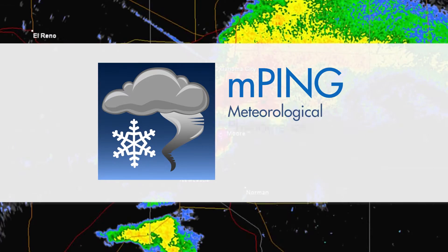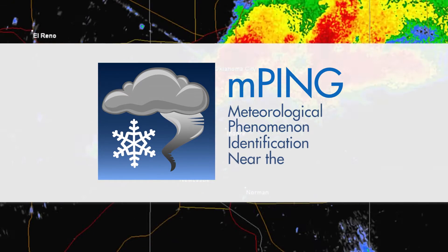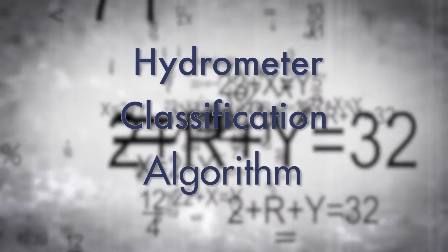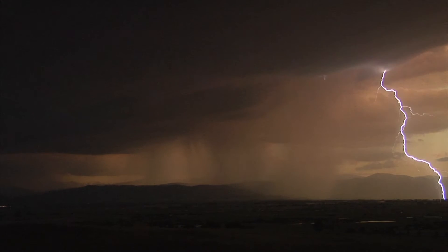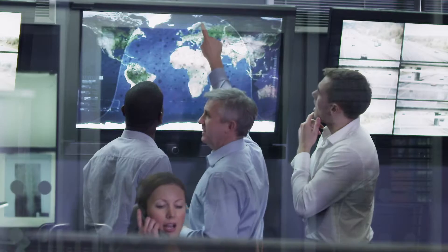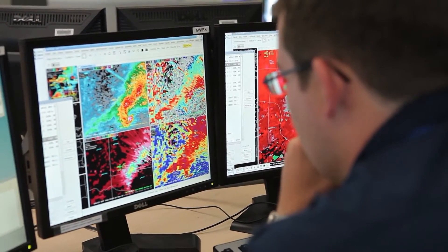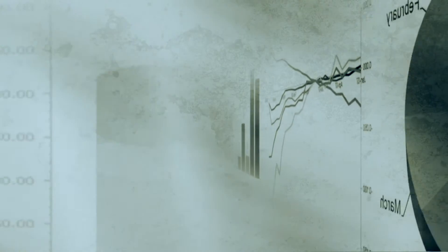MPING stands for Meteorological Phenomenon Identification Near the Ground. The National Severe Storms Laboratory had developed what they call a hydrometeor classification algorithm to give meteorologists an idea of the processes going on in the cloud. But there was a strong, irresistible temptation to apply what it said at the ground. And so the director of the National Severe Storms Laboratory formed a team, and that team's job was to develop a winter surface hydrometeor classification algorithm.